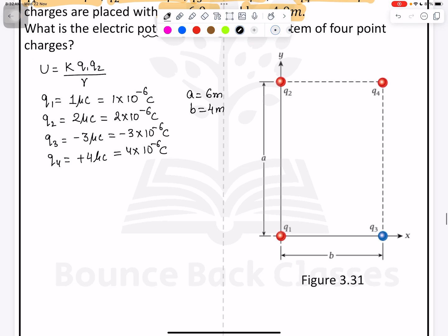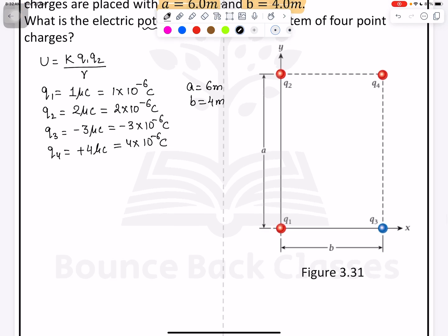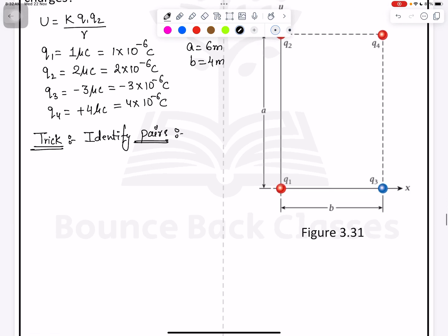I will tell you a very easy way. The word is called the trick. What is the trick? Identify the pairs. If you can identify the pairs, you can solve easily. How many pairs? We have total 4. Just find the pairs.